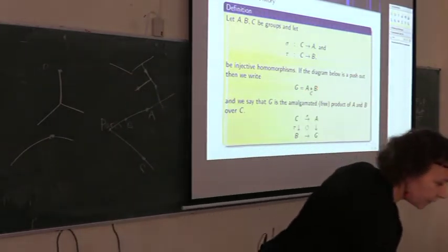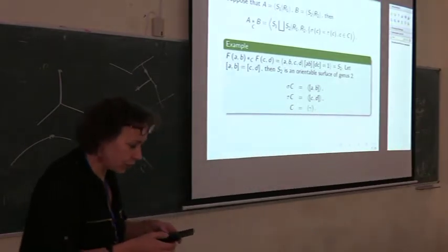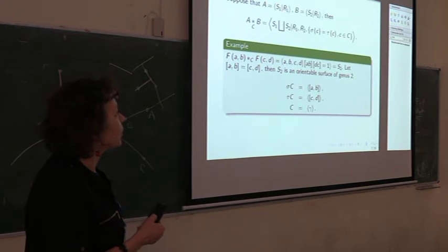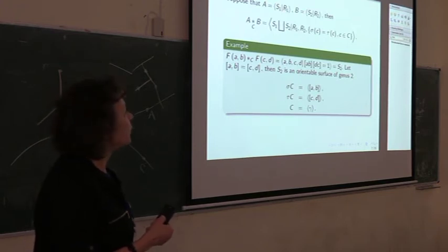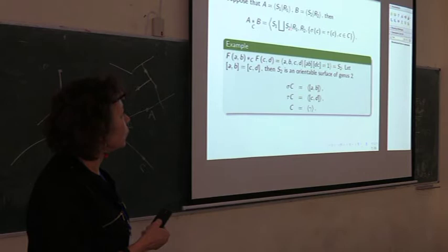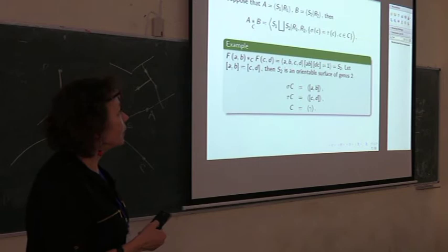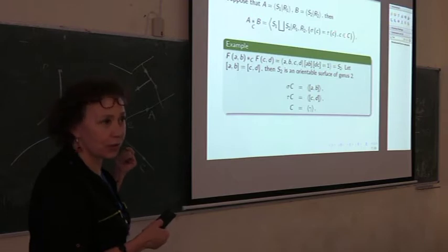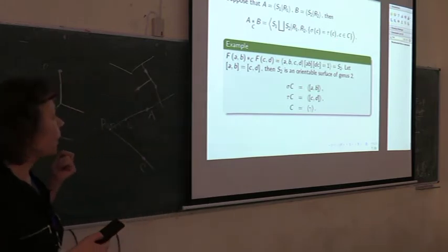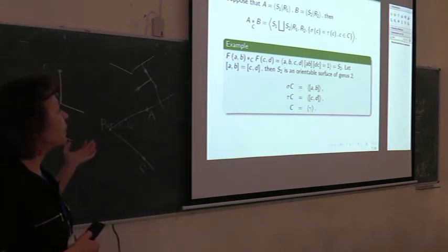In terms of generators and relations: if group A is given by generating set S1 and relations R1, and B is given by S2 and R2, then we take the free product — the joint union of generators and relations — and add that the image of each element from C in A equals its image in C in B. The simplest example: the orientable surface of genus two, with two generators and the relation that the product of two commutators equals one.